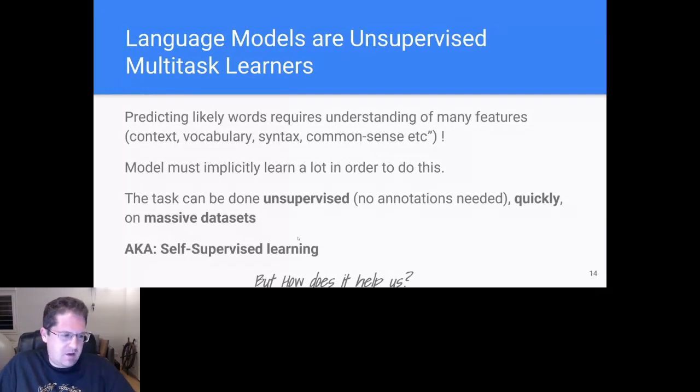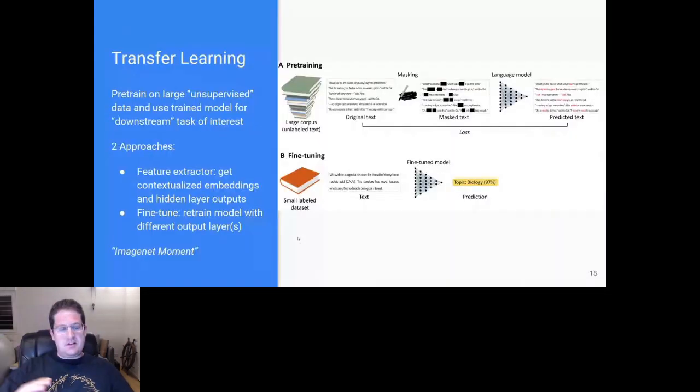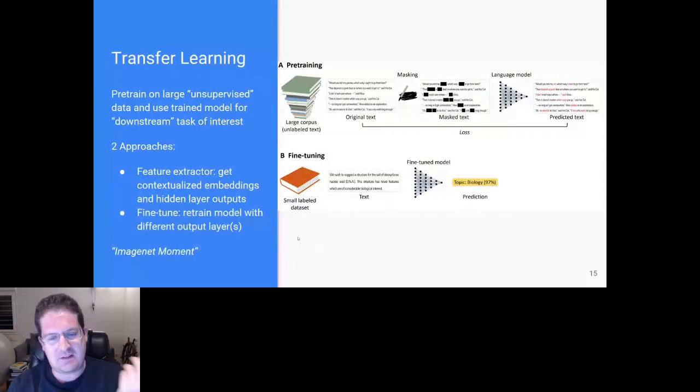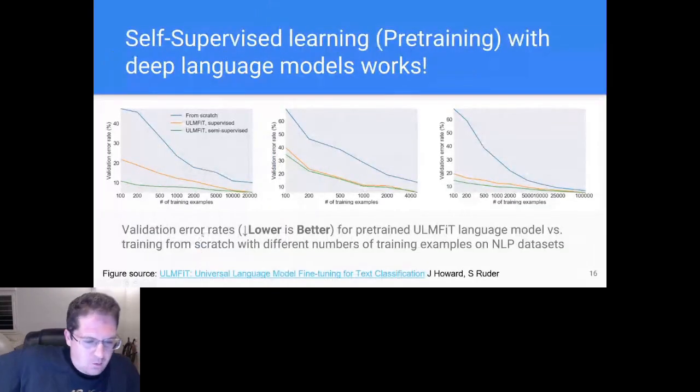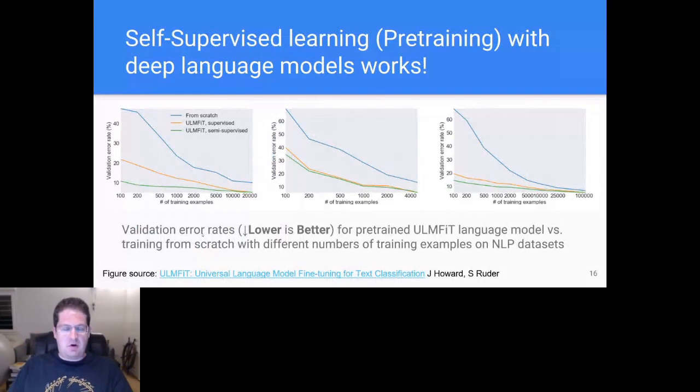So why do we as biologists or neuroscientists or whatnot care? The hope is that we can get an ImageNet moment. This is what happened in computer vision, where basically people realize that if you trained a deep model on the ImageNet dataset of about 1 million images, 1,000 classes, you get much better performance on almost any other task much faster. Just take that big giant model and apply it to your domain of interest. And this works very well, especially when you have small amounts of data.